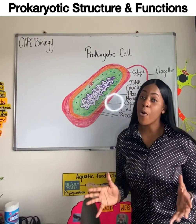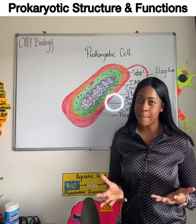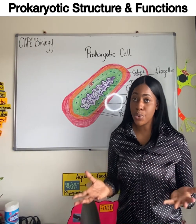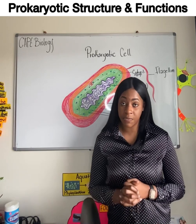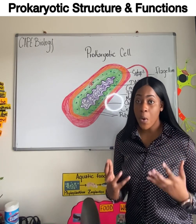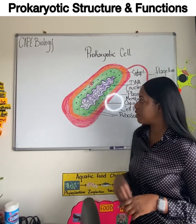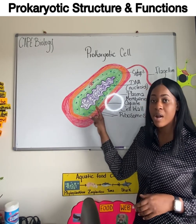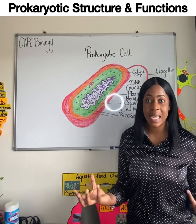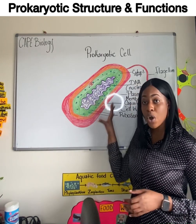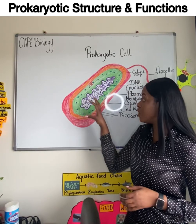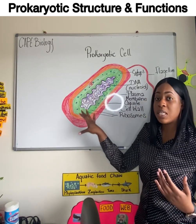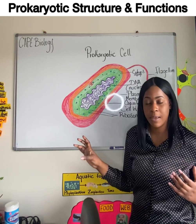A prokaryotic cell lacks membrane-bound organelles like what we discussed in the eukaryotic cells video. One of the most important distinguishing features of prokaryotes is that their genetic material is naked — it's not enclosed in a nuclear envelope and it's found floating in the cytoplasm.